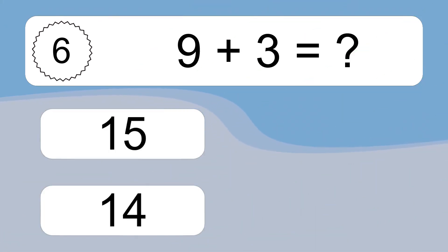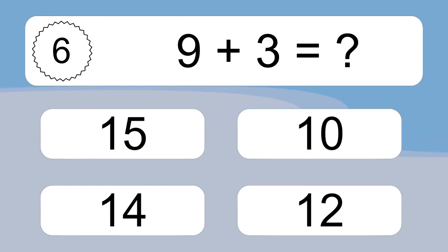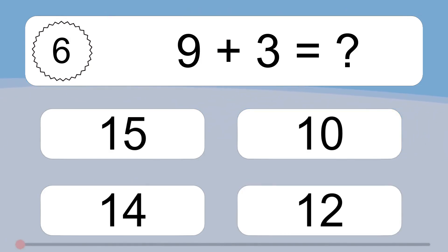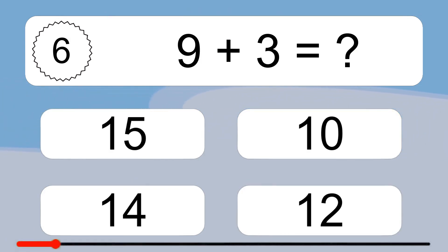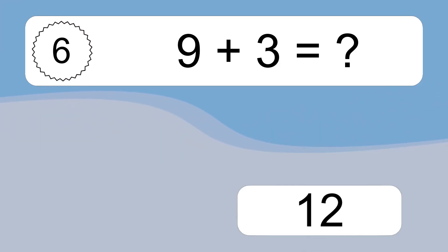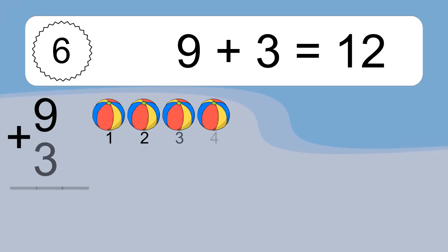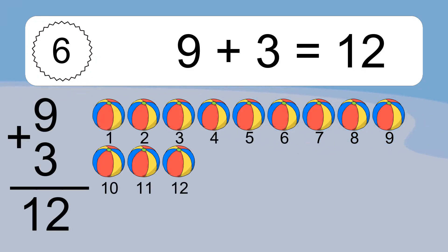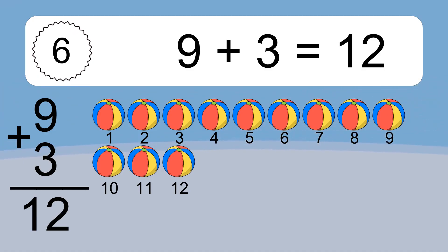9 plus 3 equals what? 9 plus 3 equals 12. Let's count it: 1, 2, 3, 4, 5, 6, 7, 8, 9, 10, 11, 12.